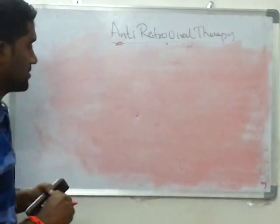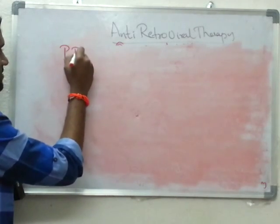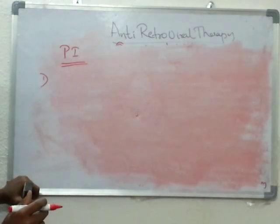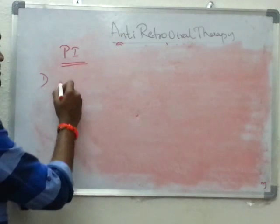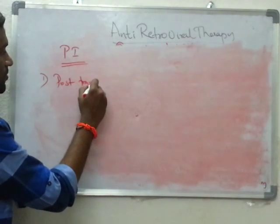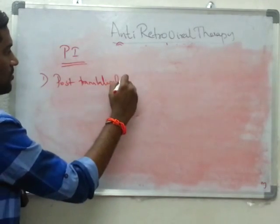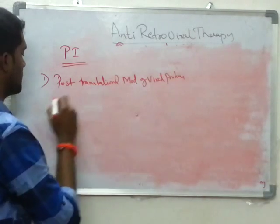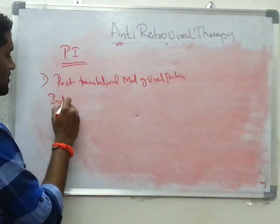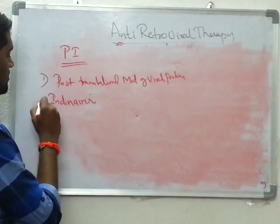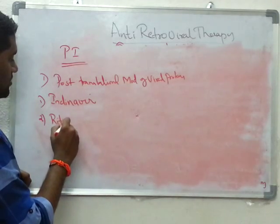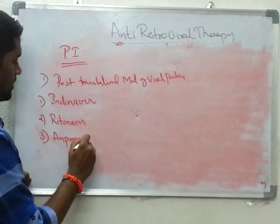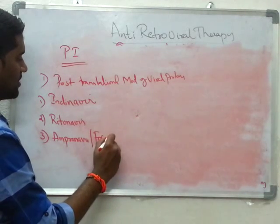Coming to the next important group — protease inhibitors. The mechanism of action is inhibition of post-translational modification of viral proteins. The drugs to remember are: Indinavir, Ritonavir, Amprenavir, Fosamprenavir, Atazanavir, and Tipranavir.